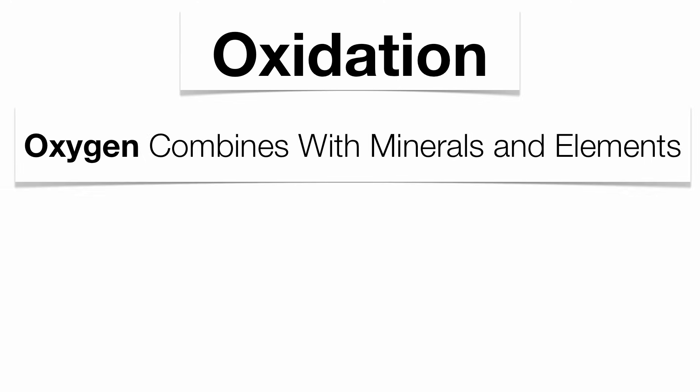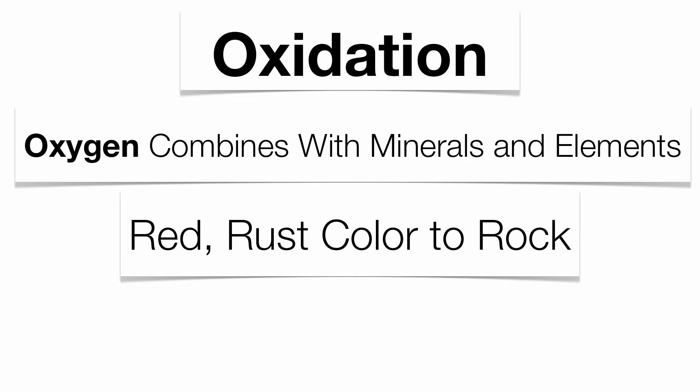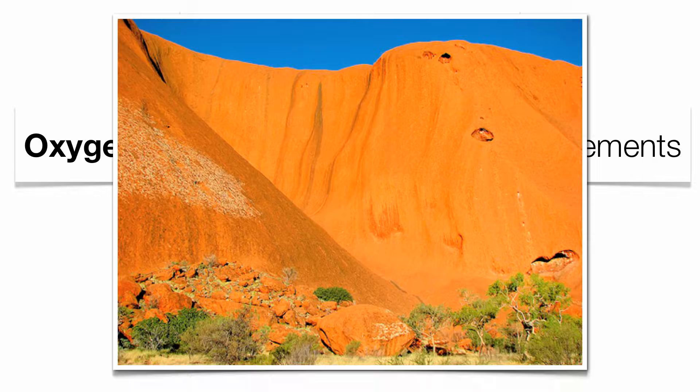The name of the type of weathering actually gives you a clue about what attacks the rock. In oxidation, oxygen combines with the minerals and elements within the rock and produces a red rust color — a beautiful red color. The reason is because of the iron within the rock. The iron and the oxygen attack each other, resulting in a very red rusty color, much like the red rock in Sedona.